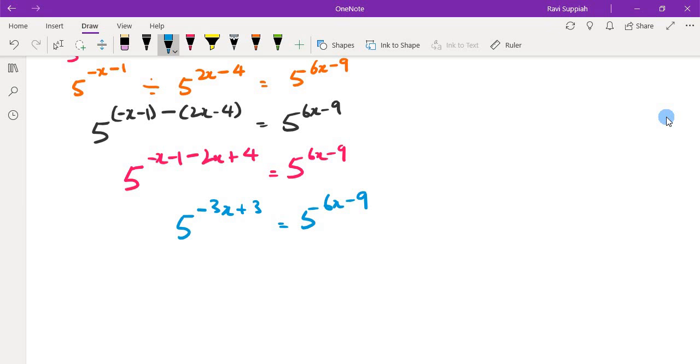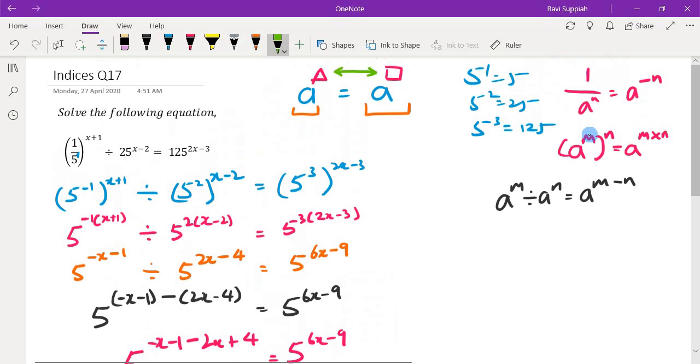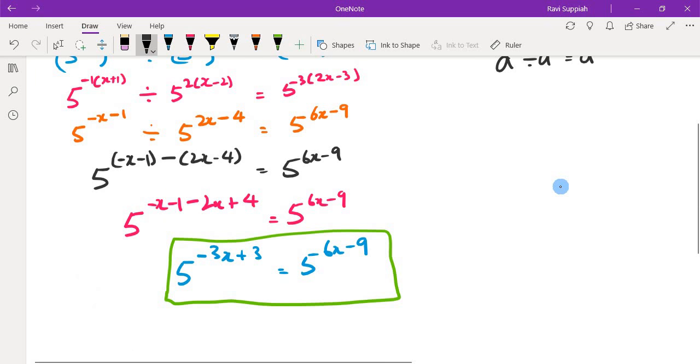So now what do you see? You see that we have reached a point which we actually set out to achieve. What do we want to achieve? We wanted to move towards a point where both the bases are the same and then we can compare the powers. So that is exactly to the point where we have come.